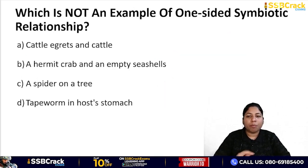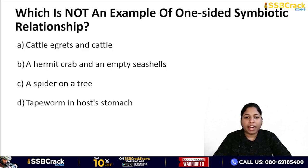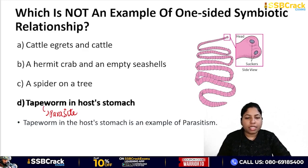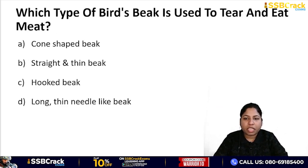Next question: which is NOT an example of a one-sided symbiotic relationship? Options: cattle egret and cattle, a hermit crab and an empty sea shell, a spider on a tree, or tapeworm in host's stomach. Tapeworm is a parasite, so that example represents parasitism — where one partner benefits and the other suffers loss. This is NOT an example of a symbiotic relationship. Correct answer: tapeworm in host's stomach.